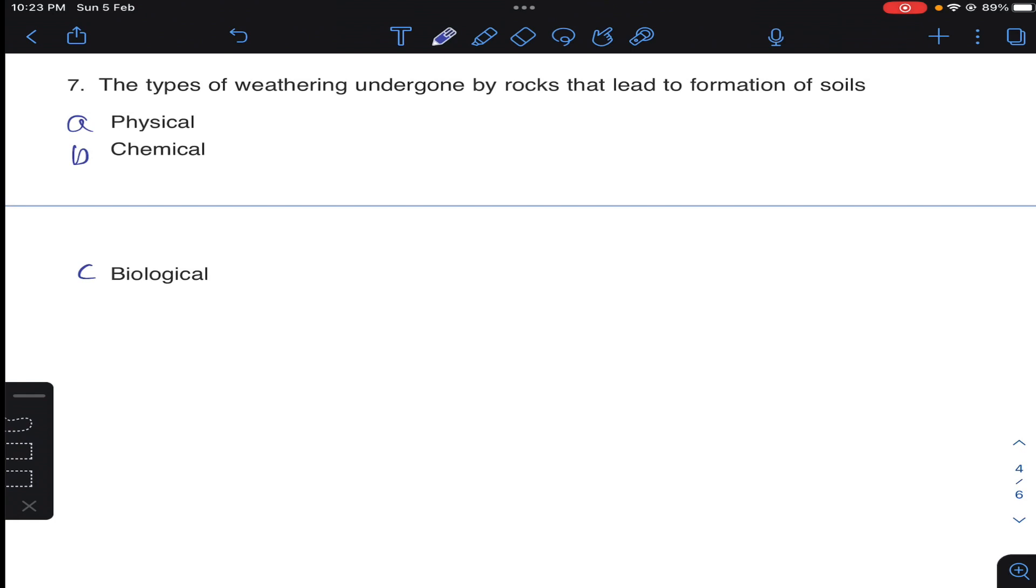The types of weathering undergone by rocks that lead to formation of soils. So weathering is generally physical weathering and chemical weathering. Both A and B are the answers. The types of weathering undergone by rocks that leads to formation of soils may be physical and chemical weatherings.